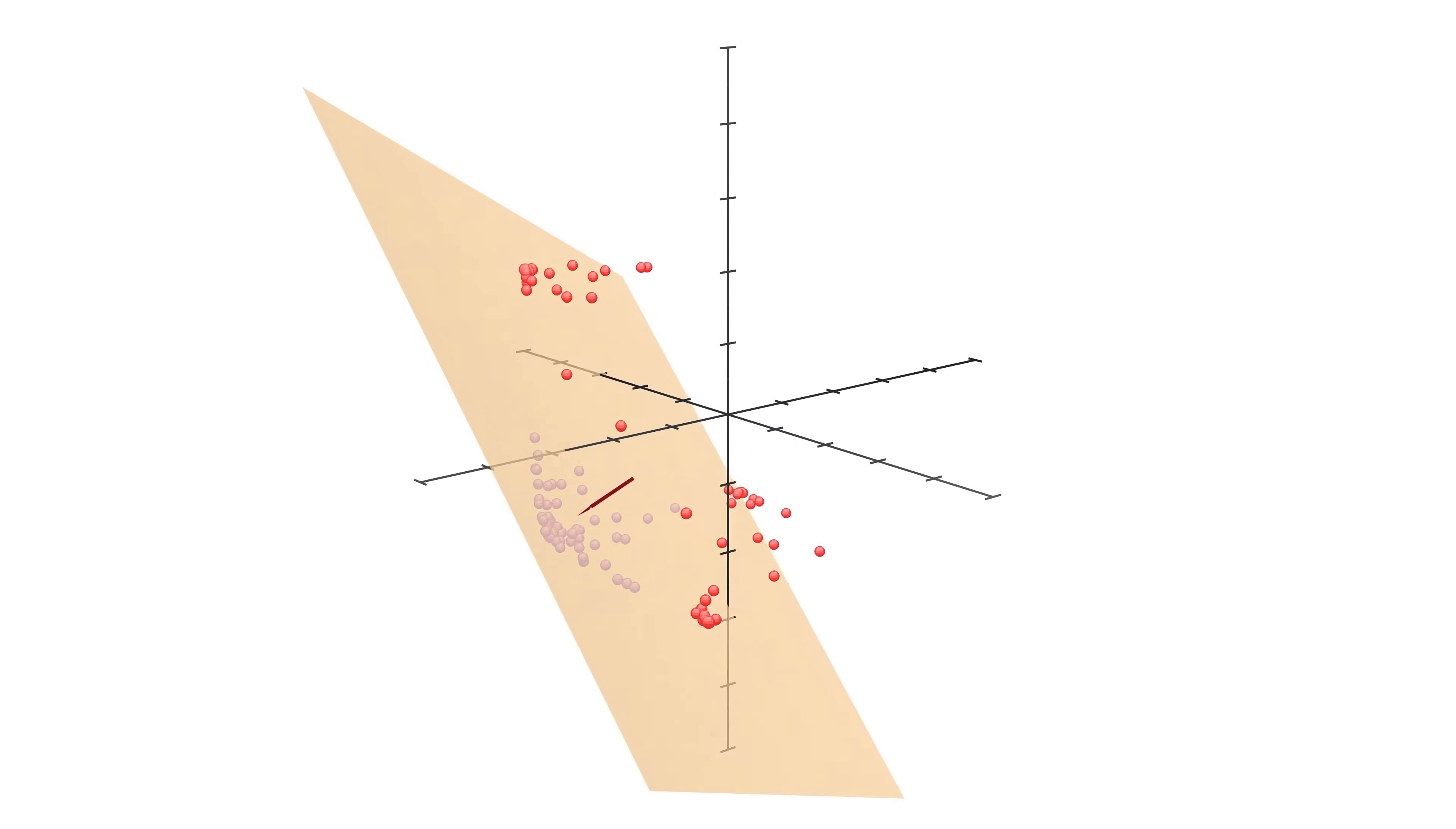Once our model got access to the third dimension, i.e. three neurons per layer, it very quickly found a way to separate the two regions by allowing the space to bulge out into the third dimension, and then the two regions simply became separable by a plane in the middle.